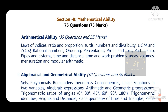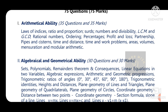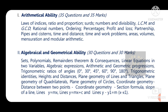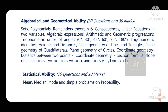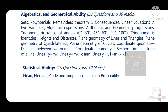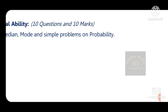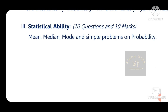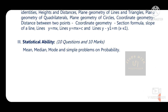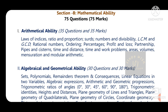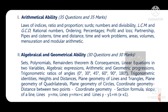Section B is Mathematical Ability, which is Maths. It has 75 questions and 75 marks. The syllabus includes Arithmetical Ability with 35 questions, Algebra and Geometry with 30 questions, and Statistical Ability with 10 questions. There are further subtopics under each of these.